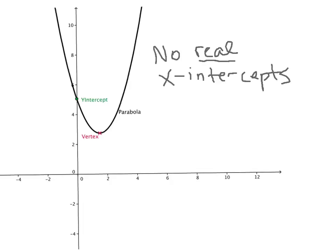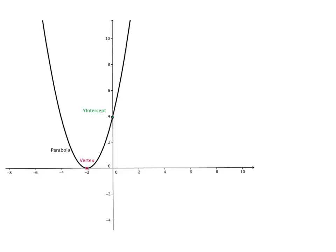But you can see here that this parabola, in particular, has no x-intercepts. Here's one other type of parabola that we will see. Again, we have a vertex.